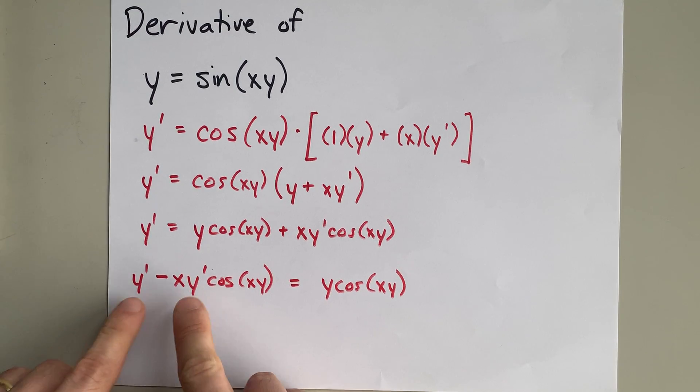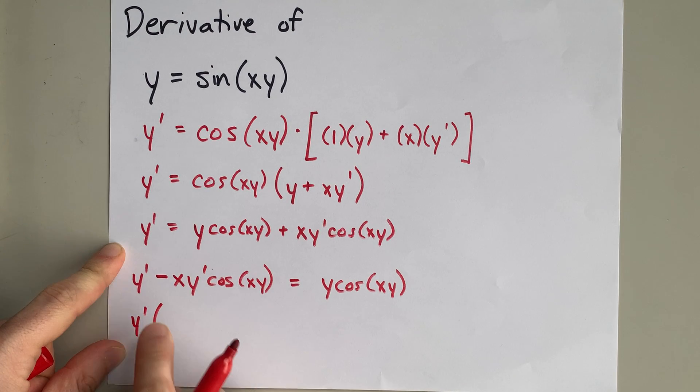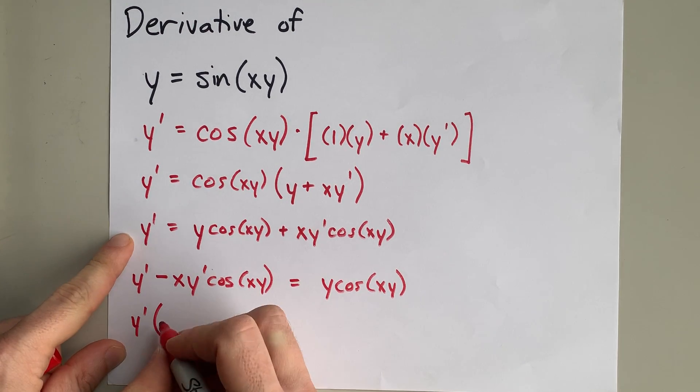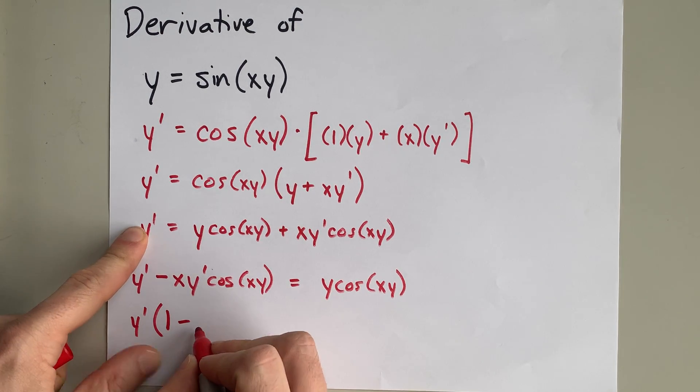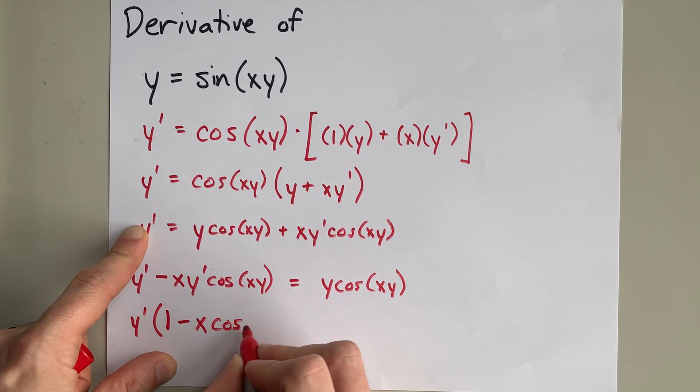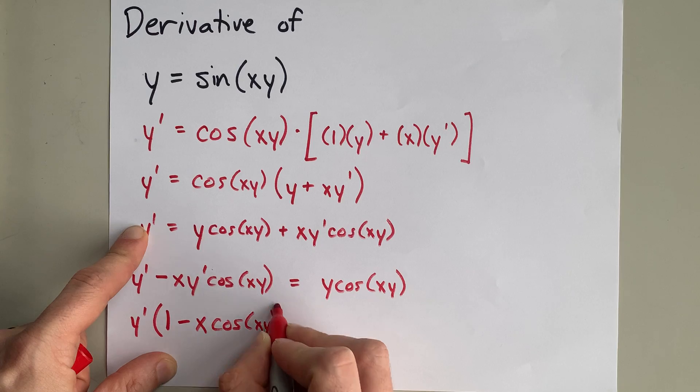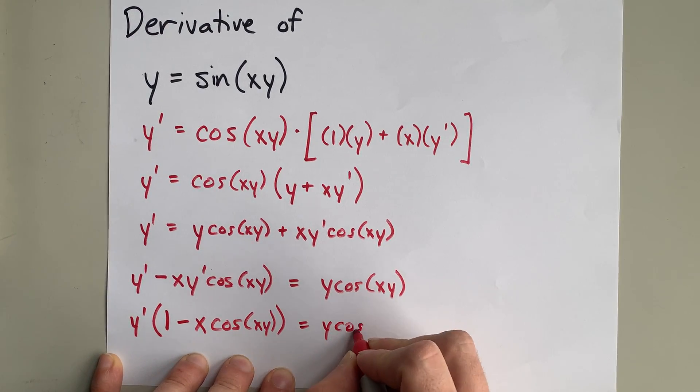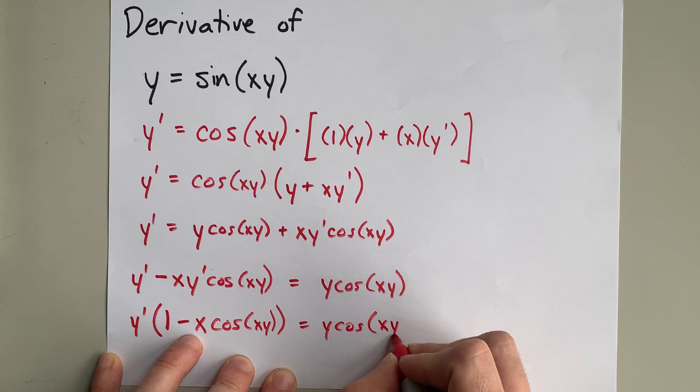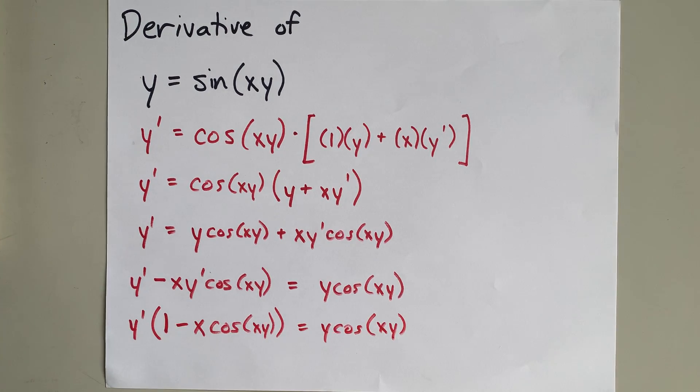To get y prime on its own, I can factor it out of both of these terms. That without that here is 1, and that without y prime is minus x·cos(xy). You might see where I'm going with this already. I now have y prime times a big chunk of stuff, and so to isolate y prime on its own, I can just divide both sides by that.